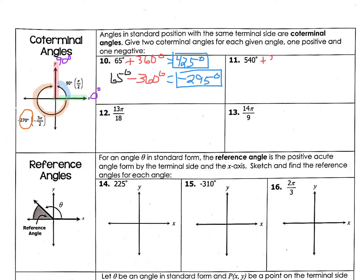So 540, we're going to add 360 degrees. We get 900 degrees. So that's one way you could have gotten a positive coterminal angle. Here's an interesting way to think about it: you could have taken 540 degrees and subtracted 360 because it's bigger than 360, and still gotten a positive coterminal angle. If you subtract those, you get 180 degrees.